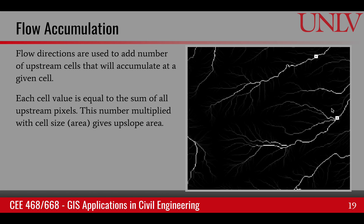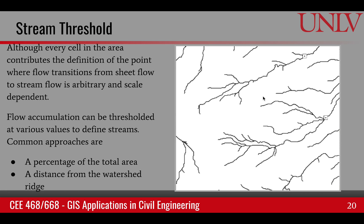The next step is stream thresholding, where we start the definition of the stream. Any flow accumulation value larger than the threshold will become a stream. Stream threshold is a process of telling where the stream begins, because technically it's an arbitrary definition. If you go in the mountains and see where the actual stream starts, it has many levels — it could start at a very small centimeter scale as tiny gullies, which then combine together to form bigger streams.